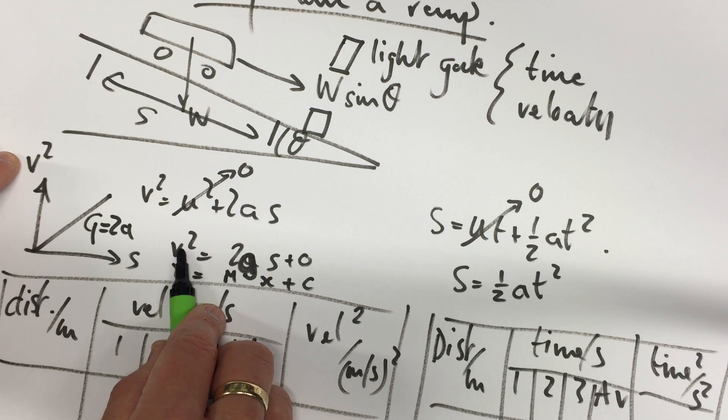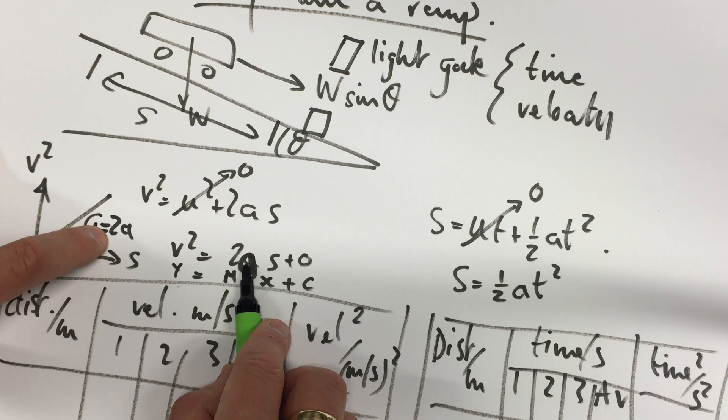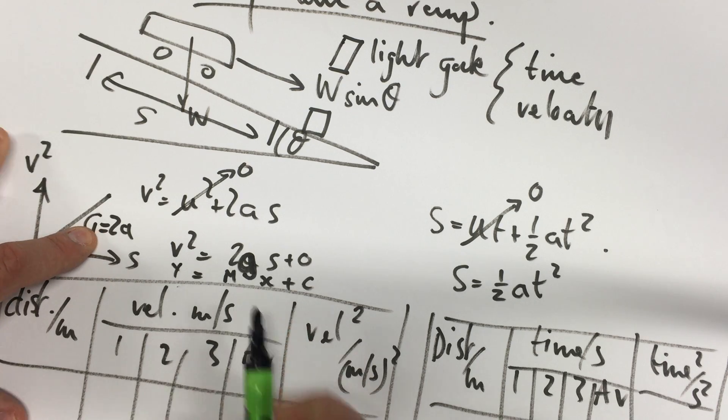v squared is my y, s is my x, so therefore 2 times acceleration is my gradient.